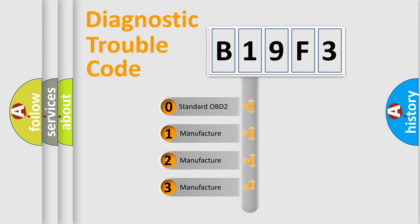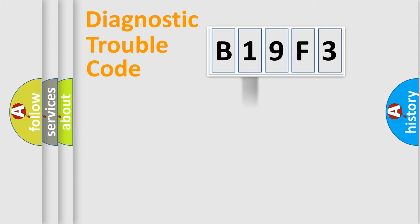If the second character is expressed as zero, it is a standardized error. In the case of numbers 1, 2, or 3, it is a manufacturer-specific expression of the car-specific error.